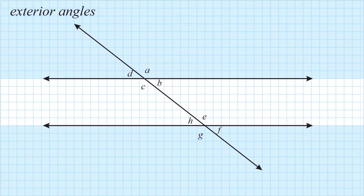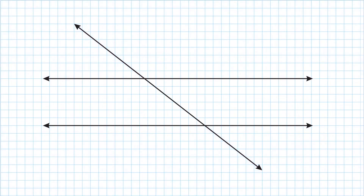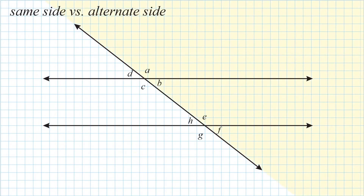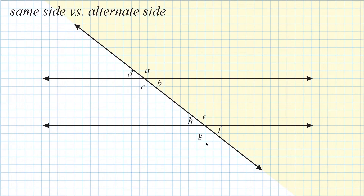Now we have to look at positions relative to our transversal. These relative positions are called same side or alternate side. If we look at everything in the yellow region, all of those angles are on one side of our transversal. Angles A, B, E, and F are all on one side, and angles D, C, H, and G are on the other side. All of these together would be considered same side angles, meaning they are on the same side of our transversal.